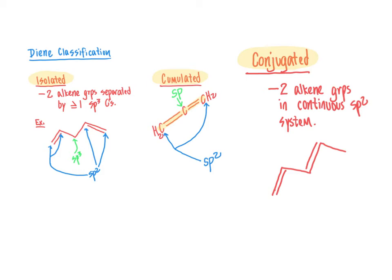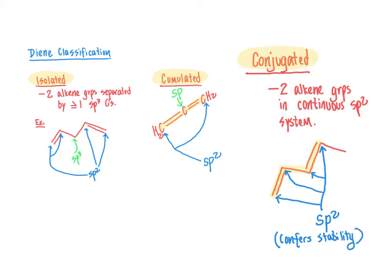In order to accomplish this conjugated system in a diene, the pattern you will always see is: alkene, single bond, alkene. Looking at the hybridization states of all of those carbon atoms, all four of those carbons are sp2 carbons. The fact that this has a continuous system of sp2 carbons confers stability. This is one reason why conjugated diene systems will undergo unique types of chemical reactions relative to isolated and accumulated dienes — because of the electrons residing within low energy bonding orbitals throughout the continuous sp2 system.